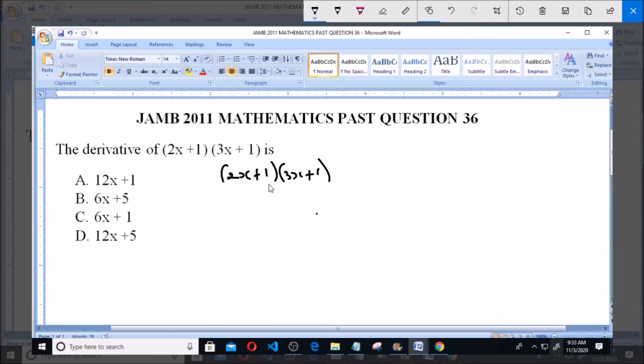Let's open this bracket. 2x multiplied by 3x will give us 6x², then 2x multiplied by 1 will give us +2x, 1 multiplied by 3x will give us +3x, and 1 multiplied by 1 will give us +1.